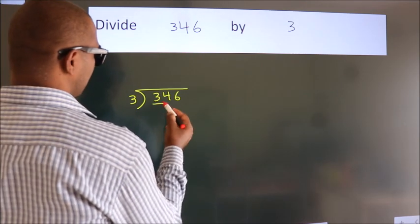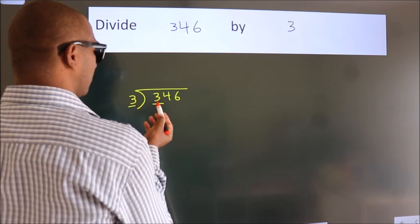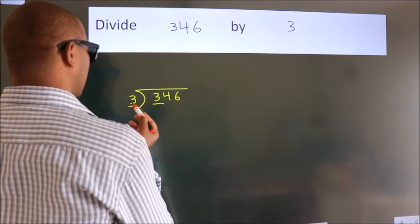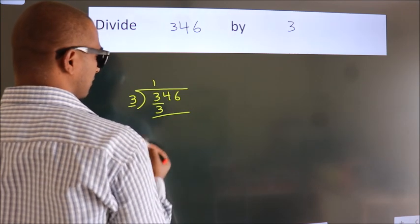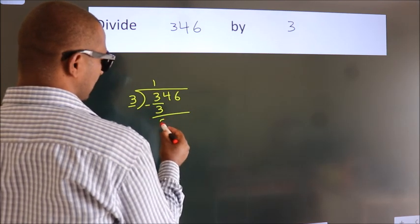Next, here we have 3, here 3. When do we get 3? In 3 table, 3 once, 3. Now, we should subtract, we get 0.